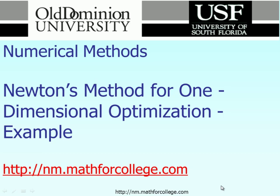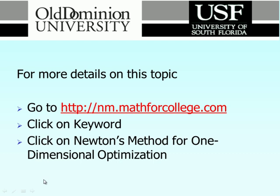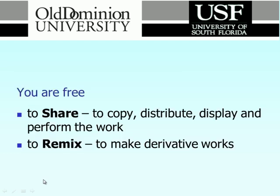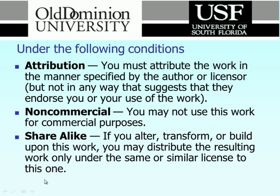In the previous lecture I explained the theory behind the Newton method to find the optimum solution for a function with one or more than one variable. The theory was mainly designed for a function with one variable, but keep in mind that the idea could be extended for the multi-variable case. More detail on this topic you can find at mathforcollege.com.